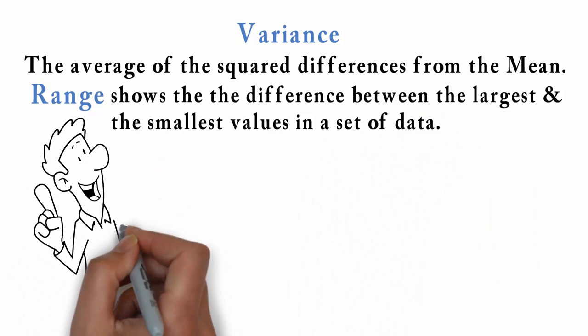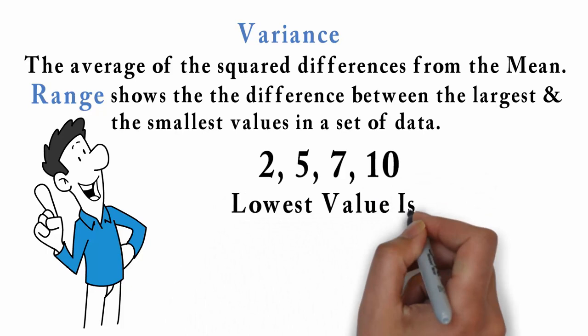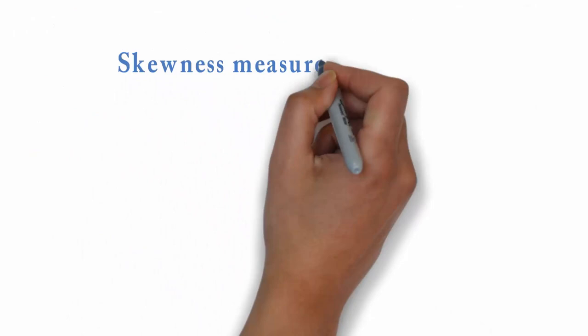For example, if we have 2, 5, 7, 10, the lowest value is 2, the highest value is 10, giving a range of 8. Skewness measures asymmetry and can be negative, symmetric or positive.